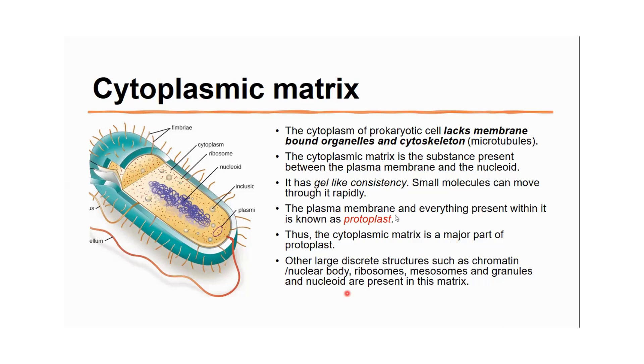Other large discrete structures such as chromatin, nuclear body, ribosomes, mesosomes, granules, and nucleoid are present in this matrix.